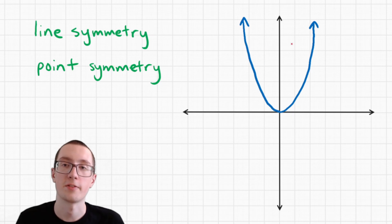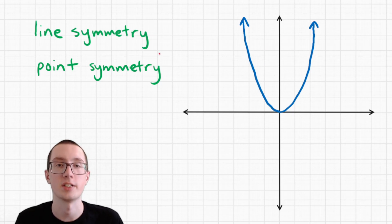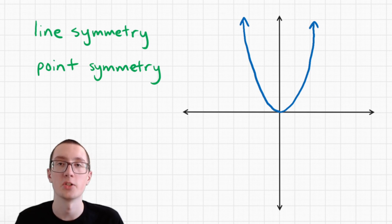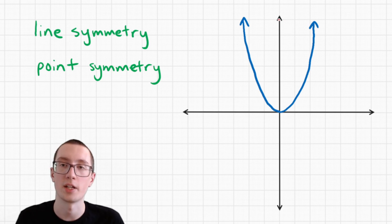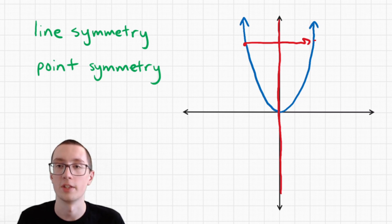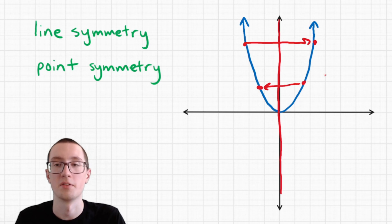Let's look at this graph. Does it have any kind of symmetry? Let's look at line symmetry first. Can you draw a line somewhere in this graph that will make it a mirror image? In this case, we can actually draw a line right here, because now everything on this side is a mirror image of the other side. This is a mirror image of this, and it works all the way around.